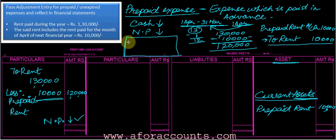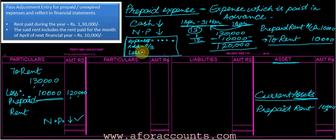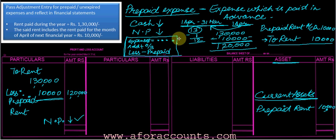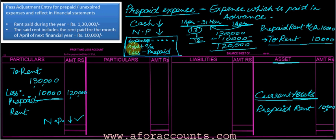A small formula to remember for both outstanding and prepaid entries: for expenses in the P&L account — add outstanding, less prepaid. We know the concept, but we also need to remember smart formulas because in exams you can't take very long to think on the concepts. So in the P&L account: if additional information mentions something outstanding, add it; if something is prepaid, subtract it.